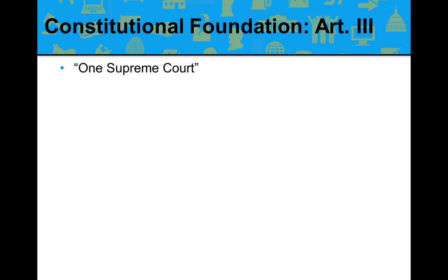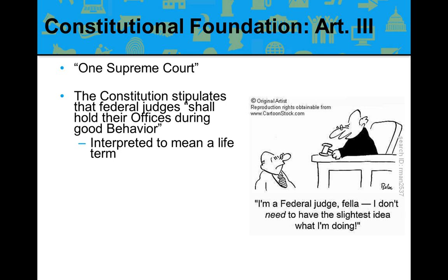Article III of the Constitution established one Supreme Court and left to Congress the structure of different courts and the number of justices. The Constitution stipulates that federal judges hold their offices during good behavior — interpreted to mean a life term. All federal judges are appointed for life, which is why judicial appointments are so political: presidents know those judges will remain on the bench for 10, 15, 20, even 30 years after the president leaves office, carrying forward their legacy and viewpoint.